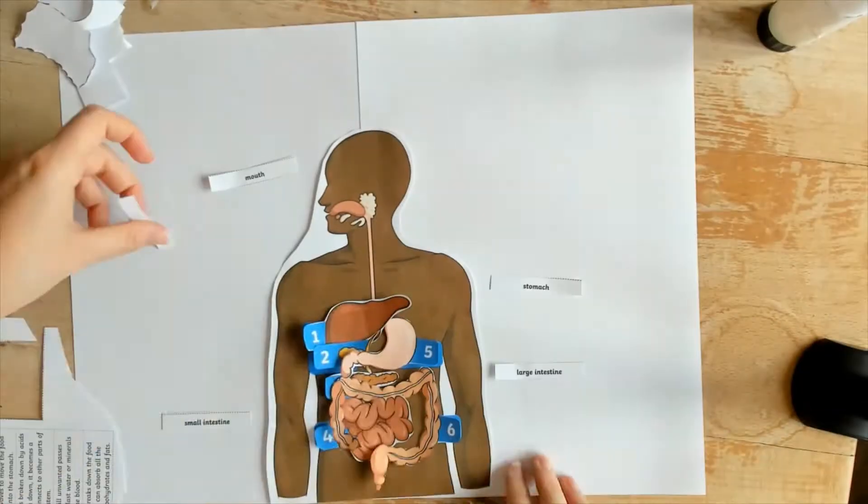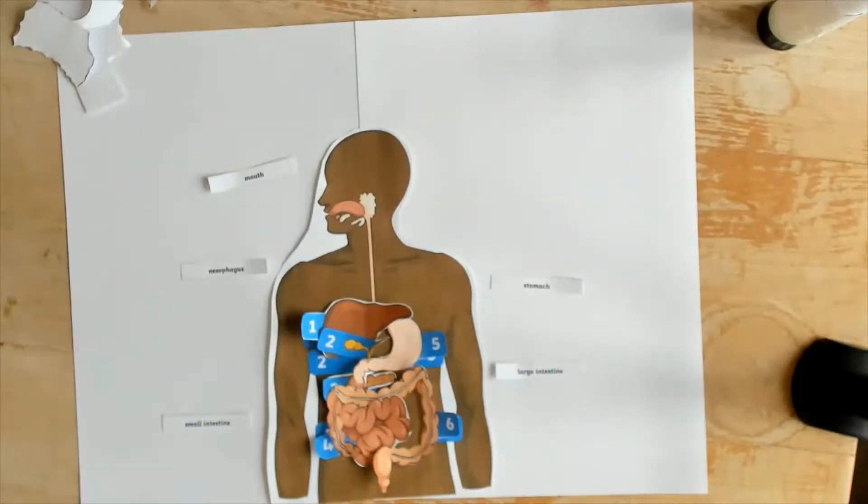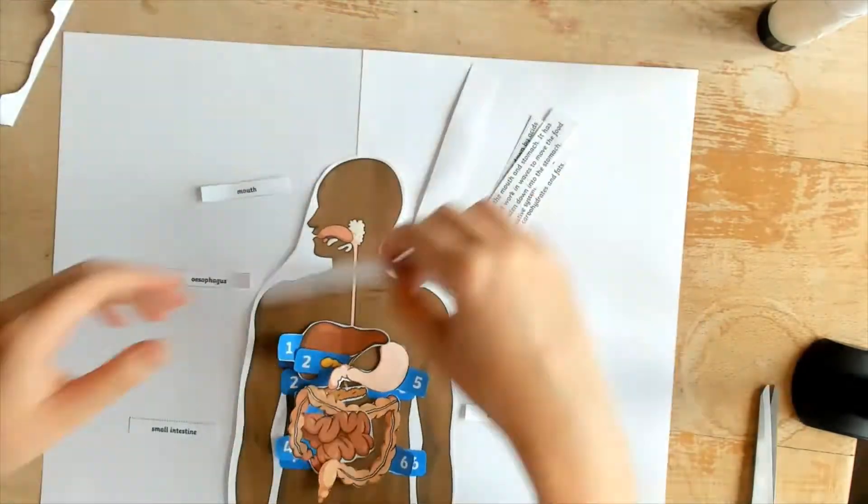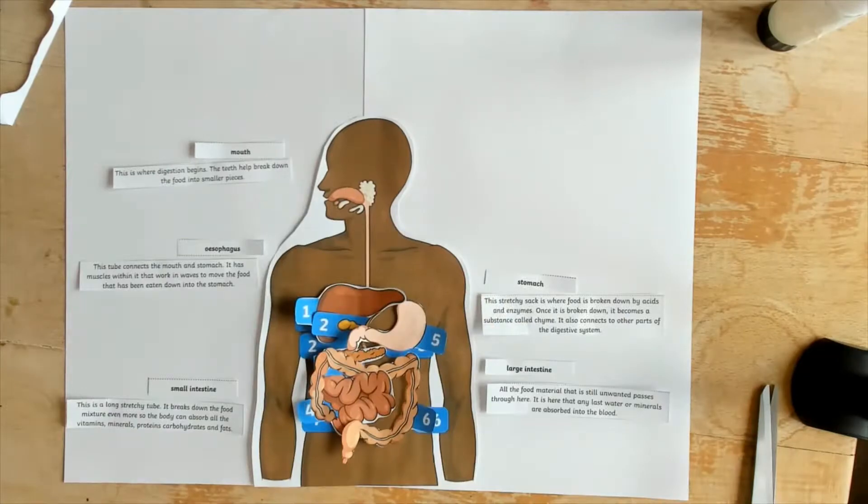Then learners must cut out the name labels and place them near the correct organ, along with the function boxes which describe the role of each organ in the system.